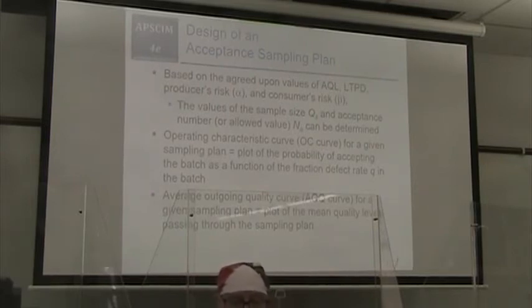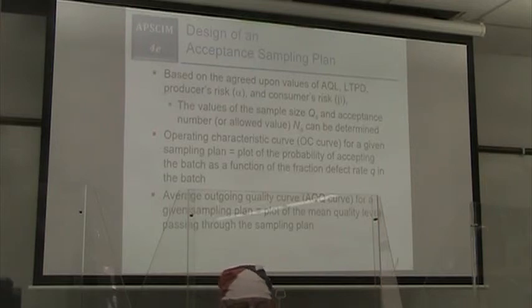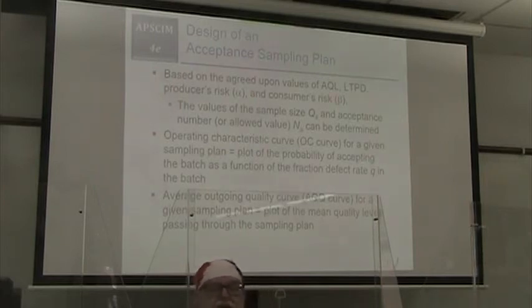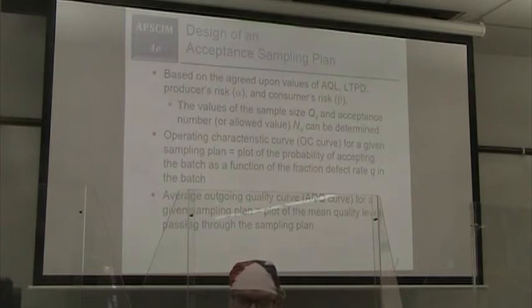When designing an acceptance sampling plan, it is based on the agreed values of the acceptable quality level, the LTPD, producer's risk alpha, and consumer's risk beta. The values of the sample size QS and acceptance number NA can then be determined. The operating characteristic (OC) curve for a given sampling plan is the plot of the probability of accepting the batch as a function of the fraction defective rate Q in the batch. For a given sampling plan, it shows the probability of accepting the lot for different fractional defect rates of incoming batches. The alpha error lies where the AQL rises to meet the OC curve, and the beta error corresponds to the LTPD point on the OC curve.